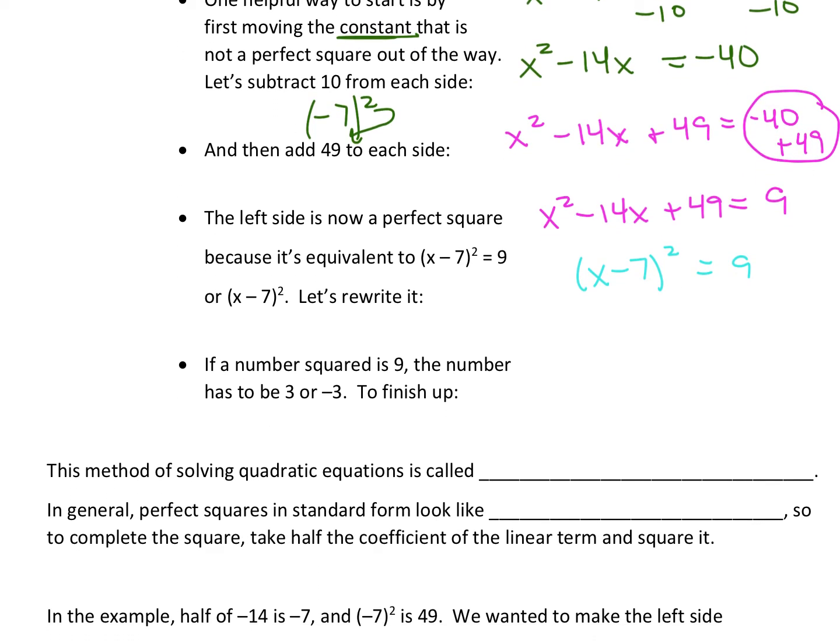Now this goes back to a previous lesson where if you have a perfect square on both sides of your equal sign, so a perfect square equals a perfect square, you can solve this. We know that x minus 7 will be equal to 3 and x minus 7 is equal to negative 3. If you solve both of those just by adding 7 to both sides, we're going to get x equals a positive 10, and then negative 3 plus 7 is a positive 4.